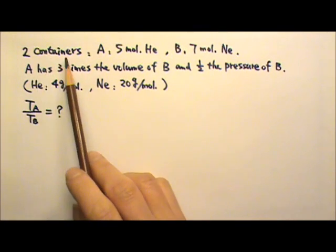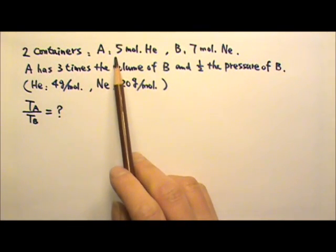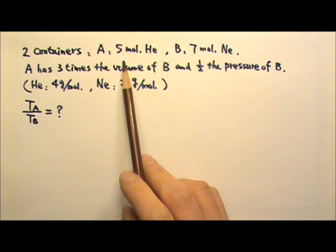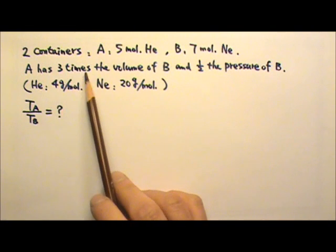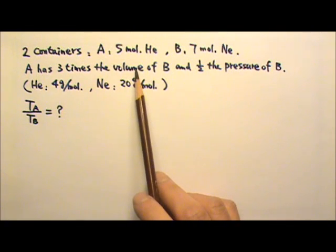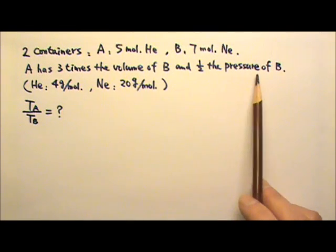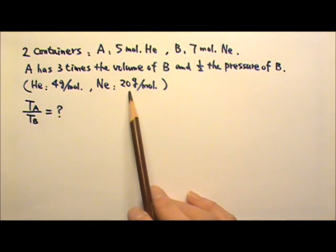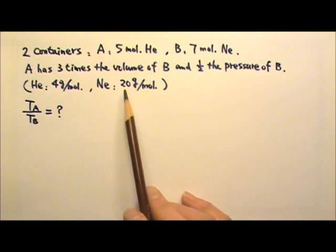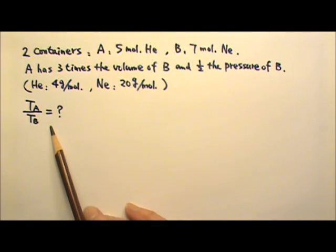Two ideal gases are held in two containers A and B. A has 5 moles of helium gas, and B has 7 moles of neon gas. A has 3 times the volume of B and half the pressure of B. The molar mass of helium is 4 grams per mole while that of neon is 20 grams per mole. Find the ratio of the temperature T_A over T_B.